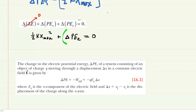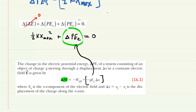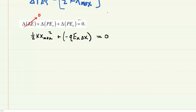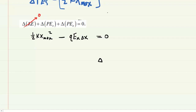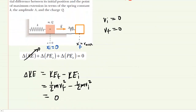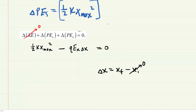We also need an expression for the change in electric potential energy. The change in electric potential energy equals negative the charge times the x-component of the electric field times the displacement along the x-axis. Adding a negative is equivalent to subtraction, so we can rewrite it as a subtraction. Delta x equals x_final minus x_initial; since x_initial is zero and x_final is x_max, we replace delta x with x_max.